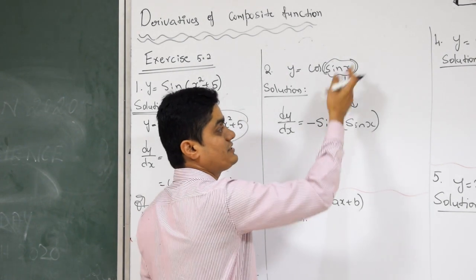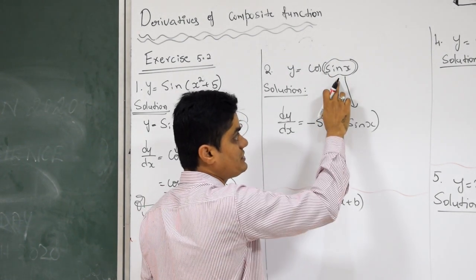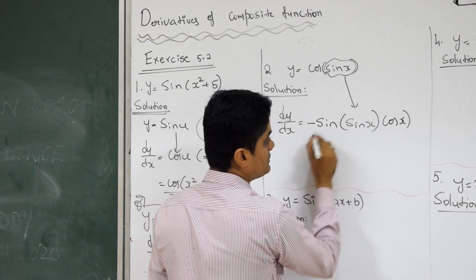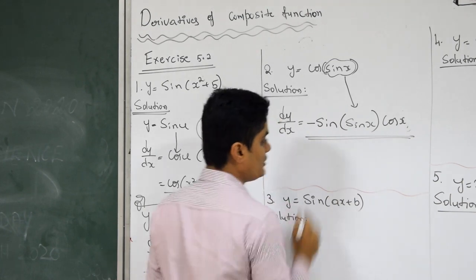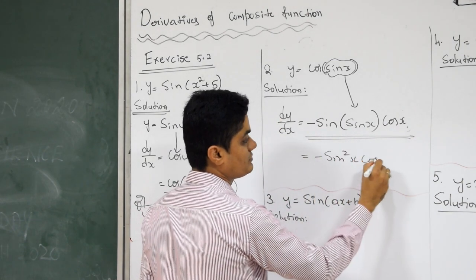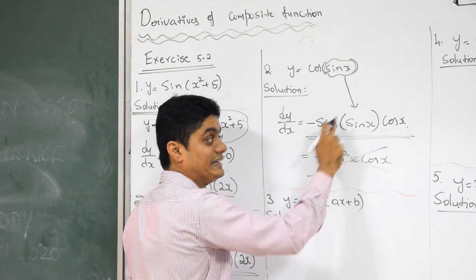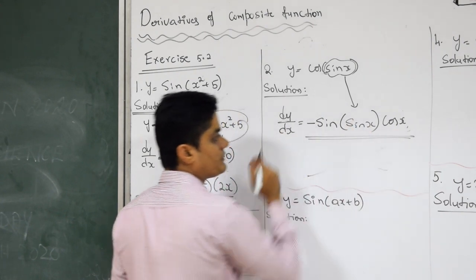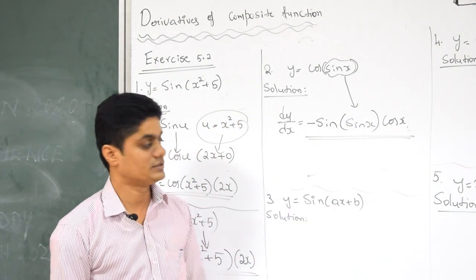Next: differentiation of the inside function. What is the inside function? Sine X. What is the derivative of sine X? Cos X. Done — no bracket required. Finish. Don't write this as minus sine squared X into cos X — that is not correct, because sine of sine X will not multiply. It is only minus sine of sine X into cos X.